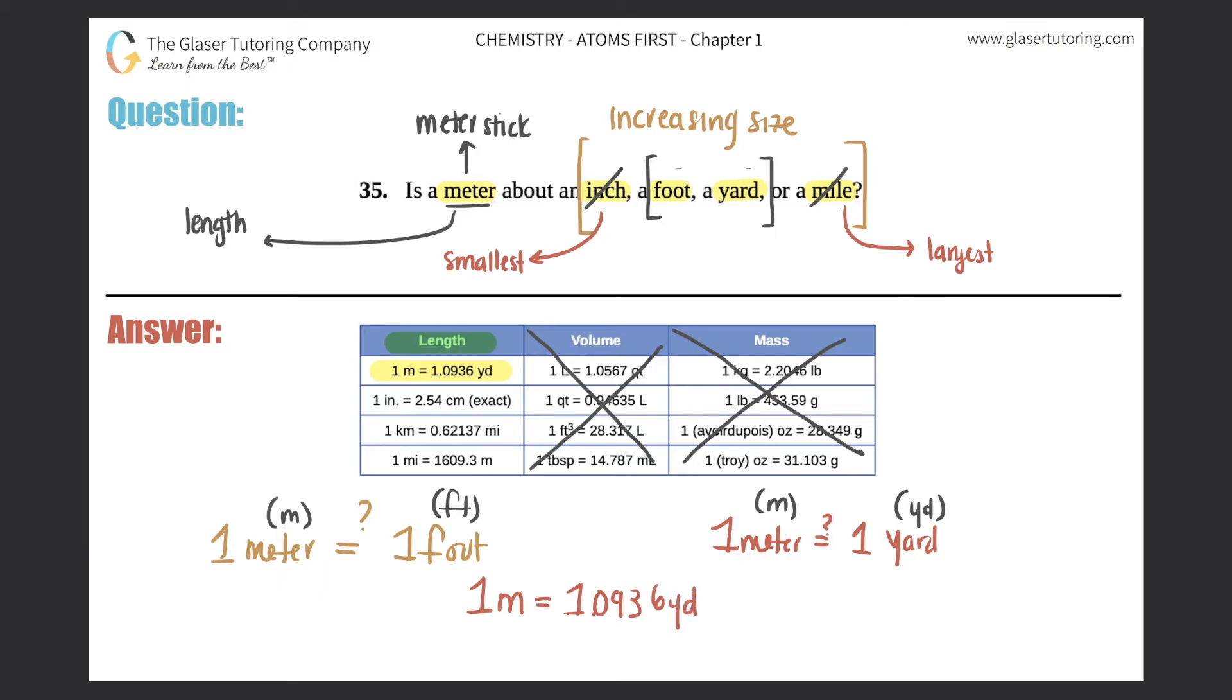That's super super close. This is basically one meter equals 1.0, etc., etc. So one meter is pretty much equal to one yard.